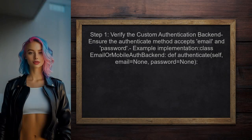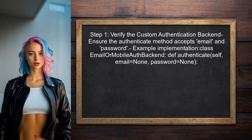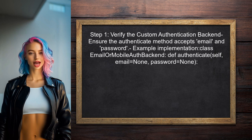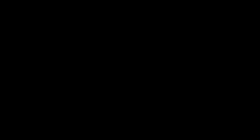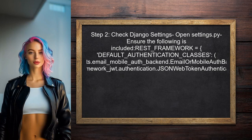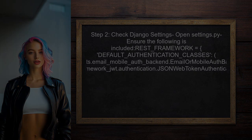To address the issue with token authentication, first ensure that the custom authentication backend is correctly implemented. Verify that the authenticate method is properly defined to accept the correct parameters. Next, check the settings in your Django project — specifically, confirm that the custom authentication backend is included in the default authentication classes in the settings.py file.